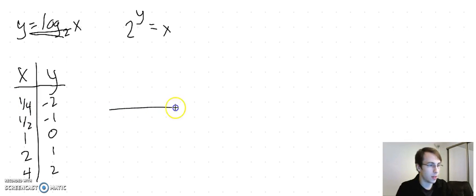Let's put that on a graph. The points are (1, 0), (2, 1), (4, 2), (1/2, -1), and (1/4, -2). Looking something like this.